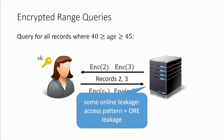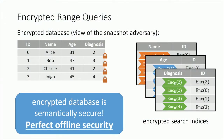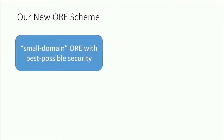If we look at what is leaked by this system, it's basically the access pattern — what set of records the client accesses — and whatever is revealed by the ORE scheme, including the comparison ordering between query and each database element, plus some additional leakage from the ORE scheme itself. But more interestingly, in the offline setting: a snapshot adversary that breaks in and steals the database sees only the encrypted database and the encrypted search indices. These indices are encrypted using an ORE scheme that actually provides semantic security — that's why we have perfect offline security. Everything the adversary sees is encrypted under a semantically secure encryption scheme.